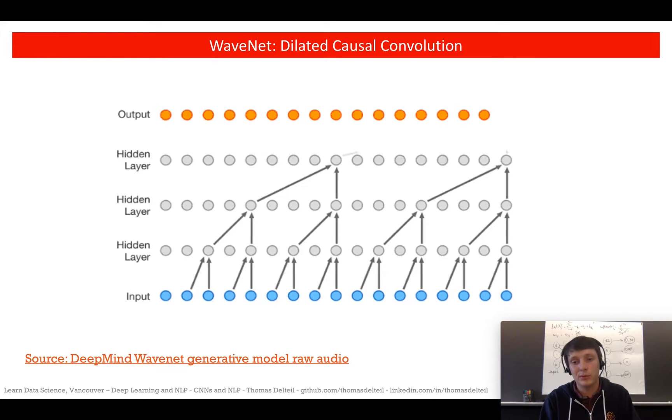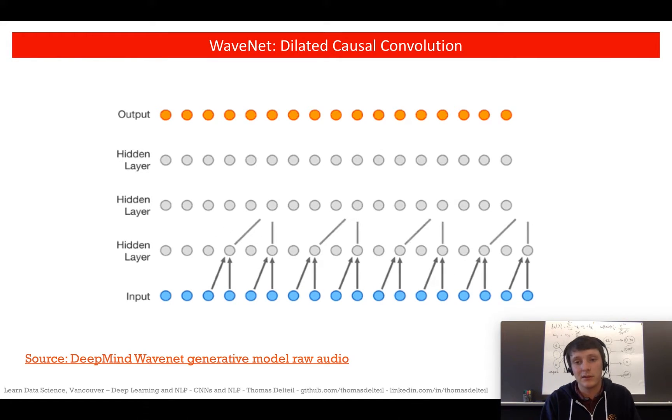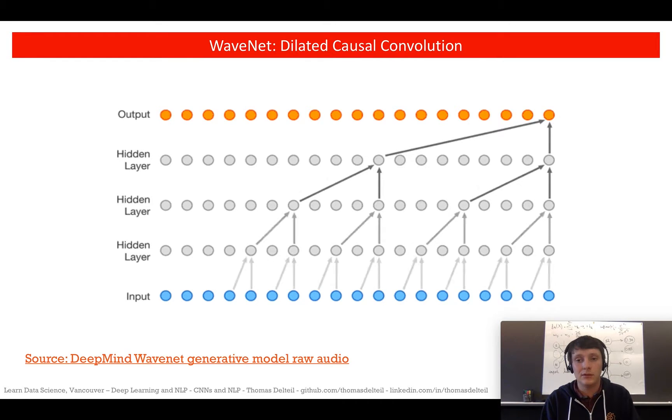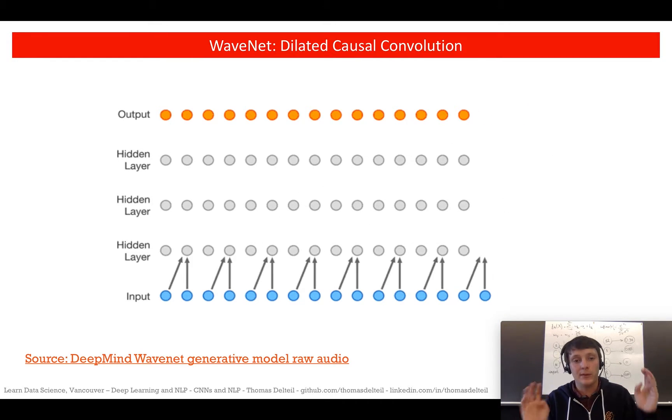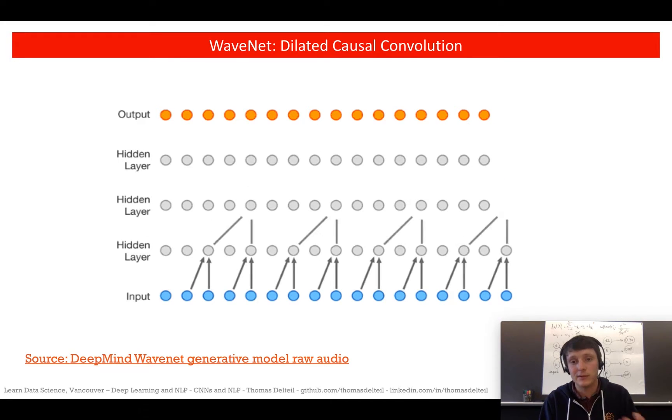That's how you can generate audio. On top of that, the network is conditioned on some text that it needs to say, and it's also using the previous input to produce the next output.